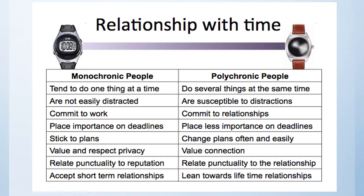Many of our students come from places where time is polychronic. They do several things at the same time, are susceptible to distractions, commit to relationships rather than work, place less importance on deadlines, change plans often and easily, value connection, relate punctuality to relationships, and lean towards lifetime relationships.